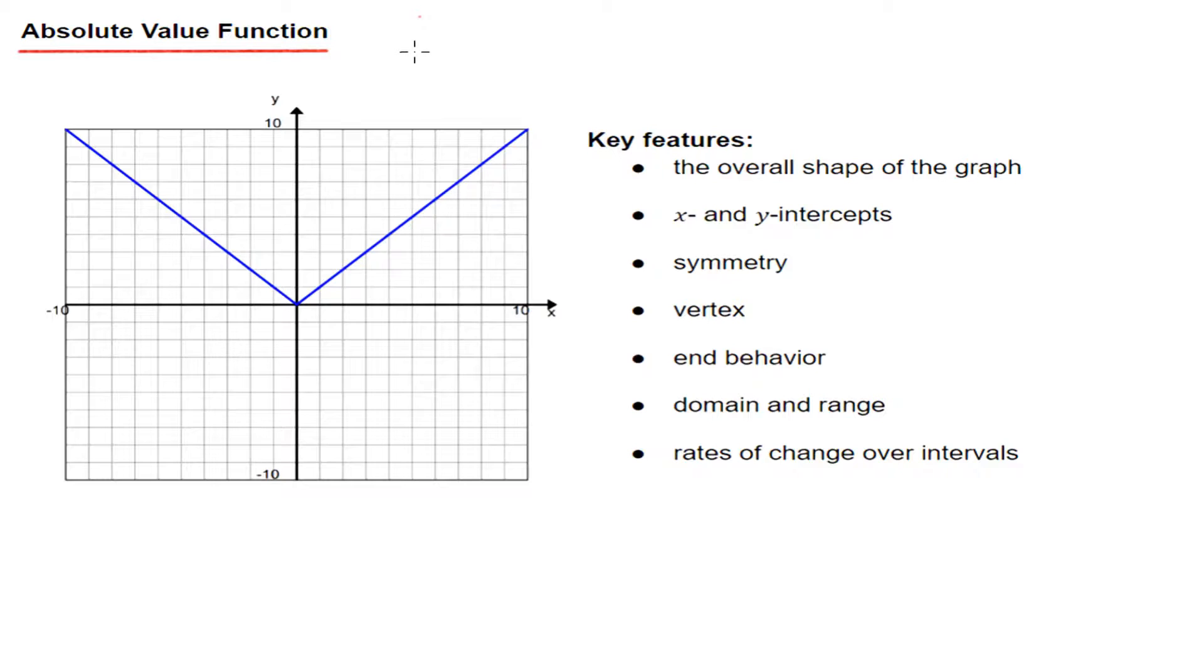Just to jump off, an absolute value parent function is going to be y equals the absolute value of x. This is my most basic parent function. If I wanted to add some stuff to it, I could have y equals m, and then the absolute value of x plus b, where m is going to be my slope and b my y-intercept.